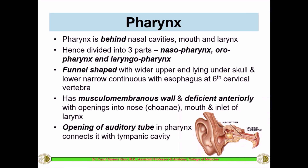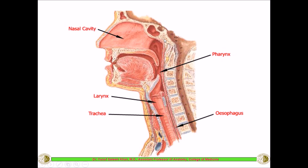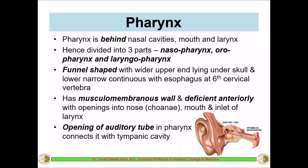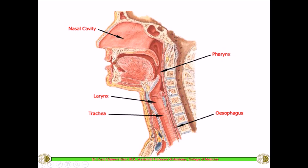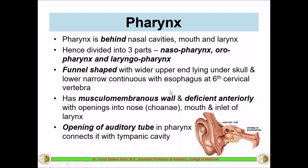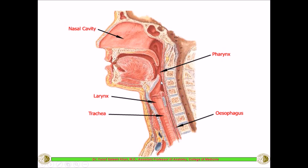The pharynx is funnel-shaped with a wider upper end lying under the skull. It extends from the base of the skull, and the lower narrow end is continuous with the esophagus at the sixth cervical vertebra. It has a musculomembranous wall and is deficient anteriorly with openings into the nose, mouth, and inlet of the larynx.